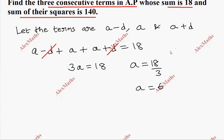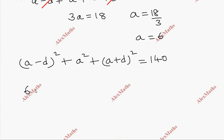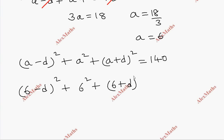Now applying the second condition: the sum of their squares. (a - d)² + a² + (a + d)² = 140. Substituting a = 6: (6 - d)² + 6² + (6 + d)² = 140.